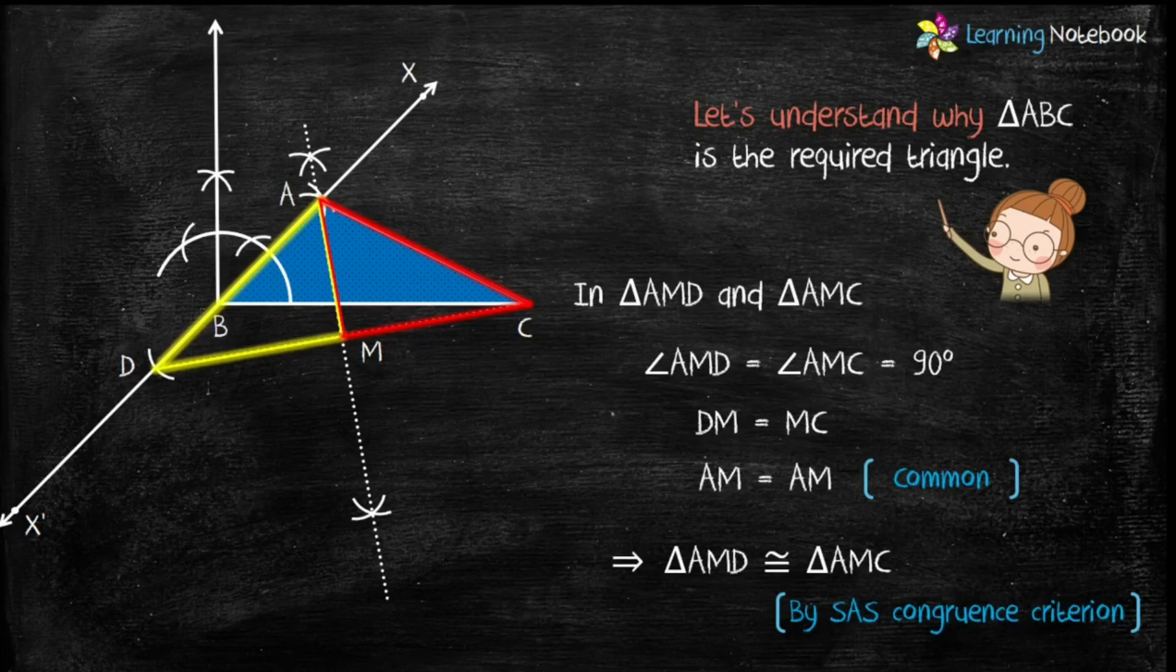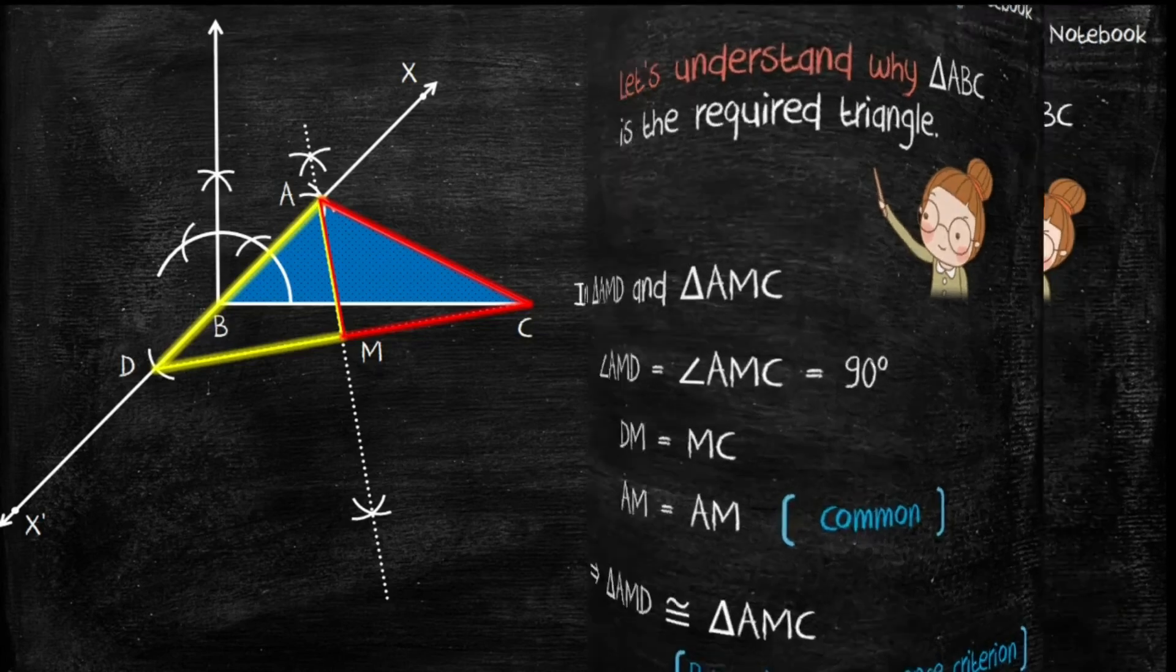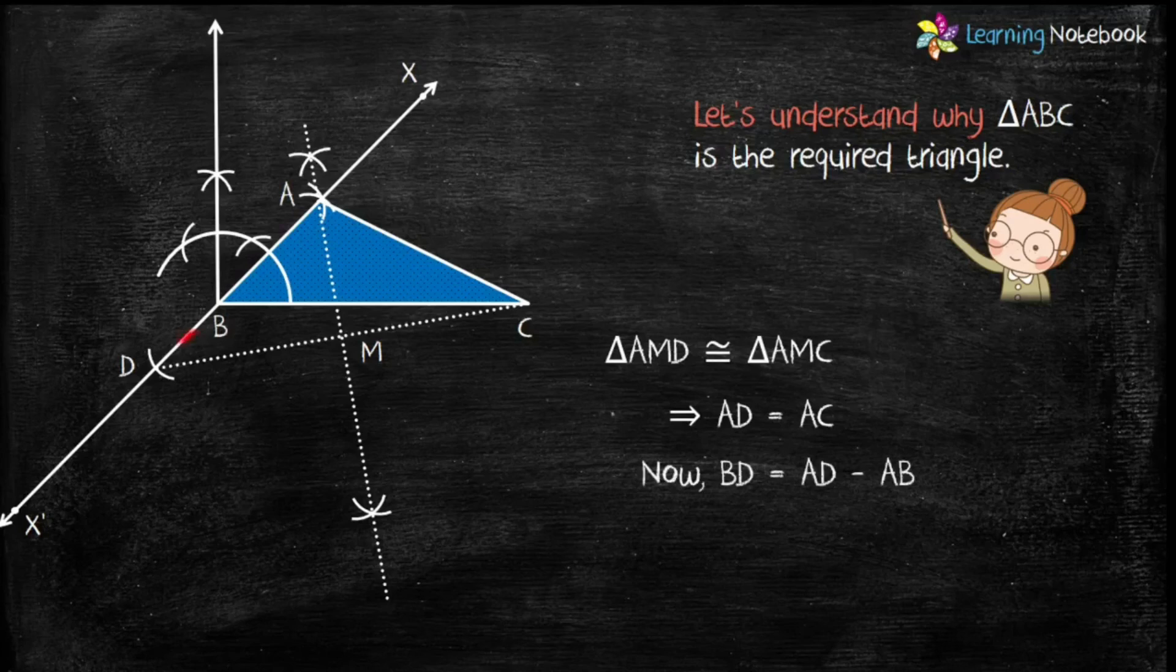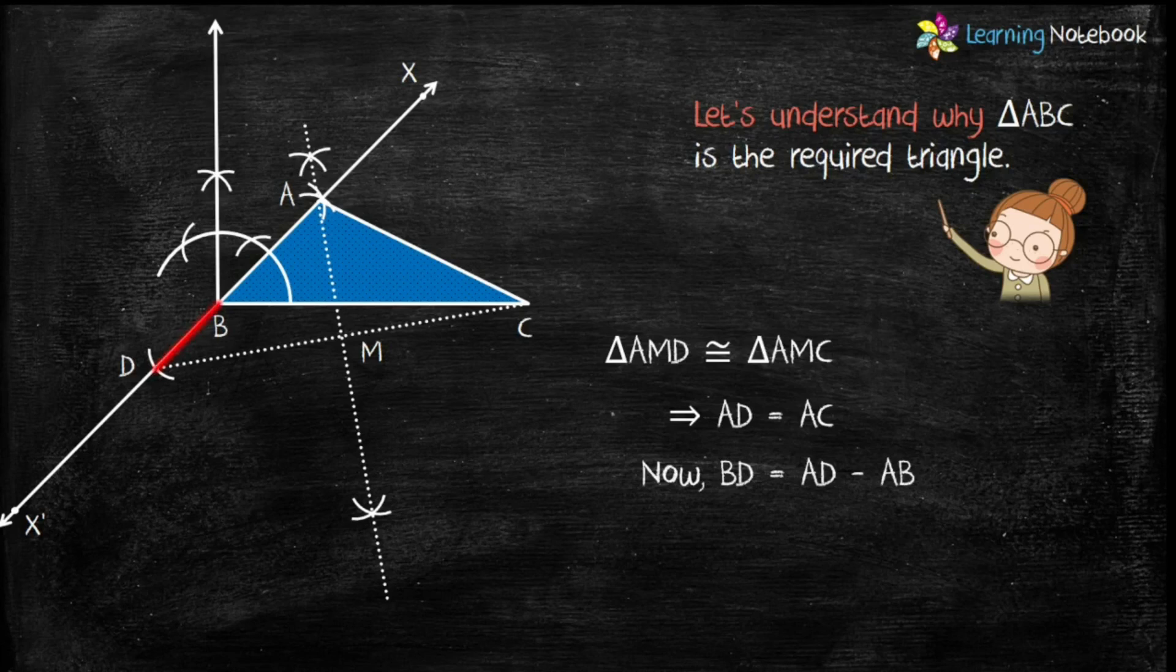Now since both the triangles are congruent, AD equals to AC. And students BD equals to AD minus AB. And we just proved that AD equals to AC. Therefore we can say BD equals to AC minus AB, which we constructed. Hence this construction is justified.